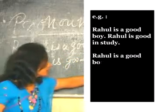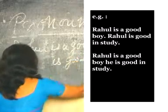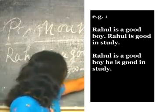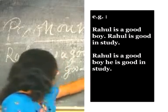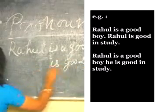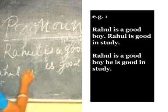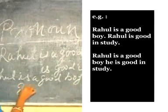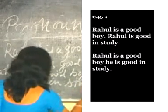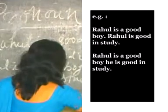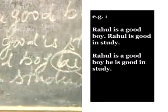Now the next example of pronoun. See, 'Rahul is a good boy. Rahul is good in studies.' These are two sentences, but we have to make one sentence. Instead of 'Rahul' in the second sentence, we put 'he': 'Rahul is a good boy, he is good in studies.' Here 'he' is the pronoun.